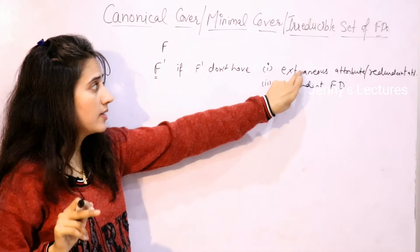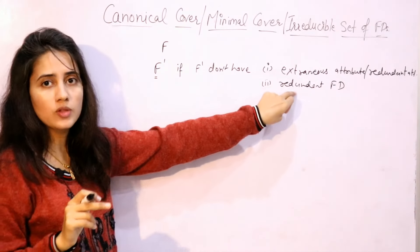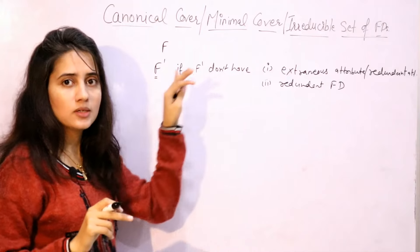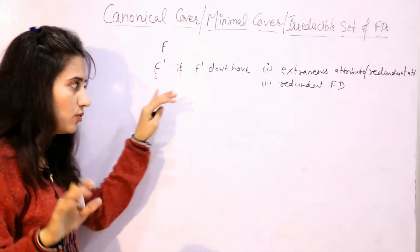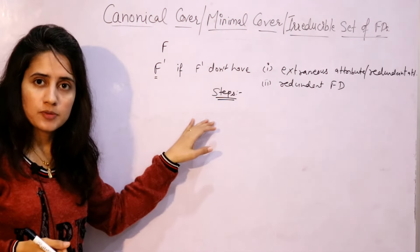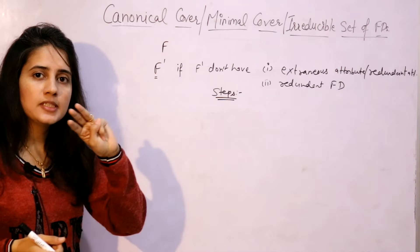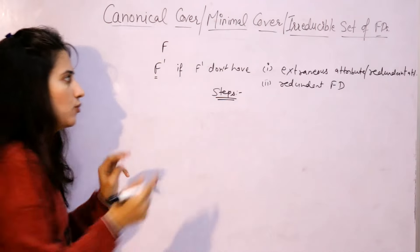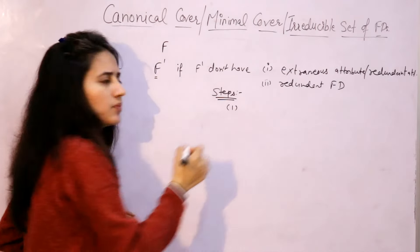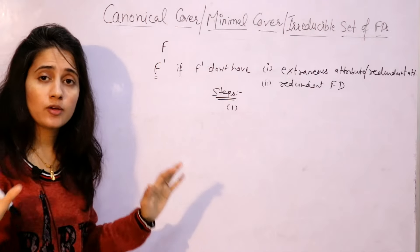You have to remove extraneous attributes and redundant functional dependencies. Now, how to remove these — we will discuss with the help of a proper example. First, let me write down those steps. There are basically three steps. Step one: apply the splitting rule.